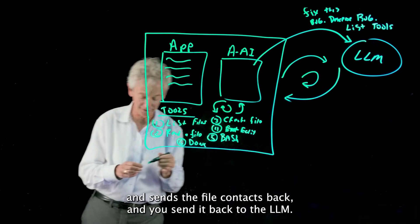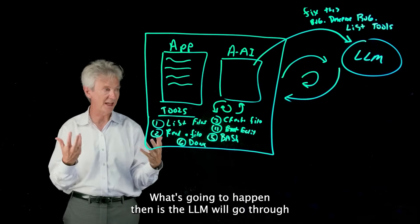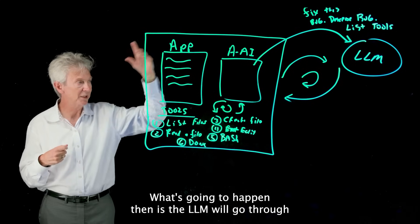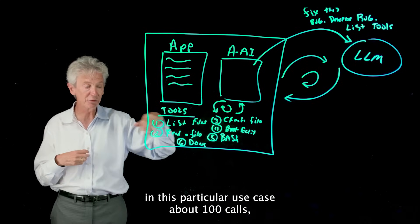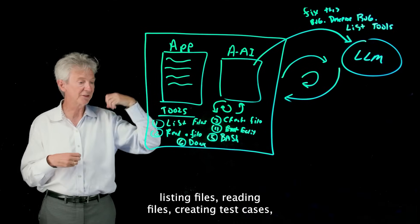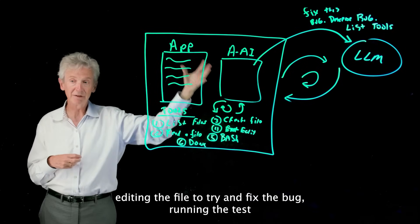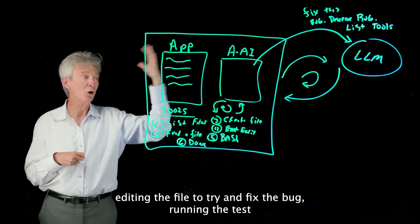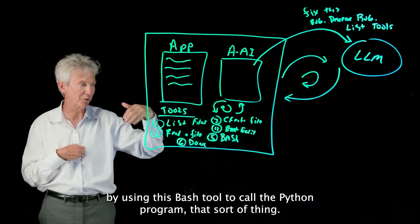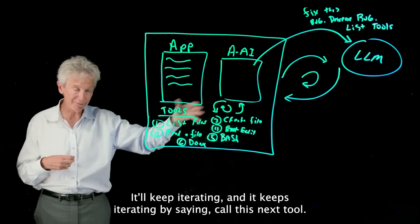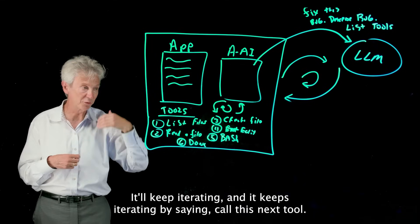And that is actually it. What's going to happen then is the LLM will go through in this particular use case about a hundred calls, listing files, reading files, creating test cases, editing the file to try and fix the bug, running the test by using this bash tool to call the Python program.